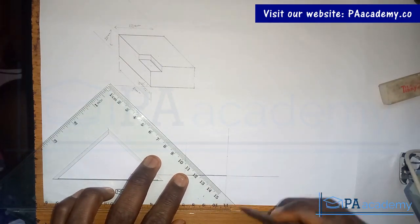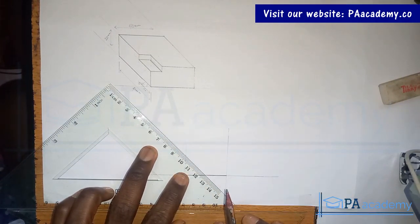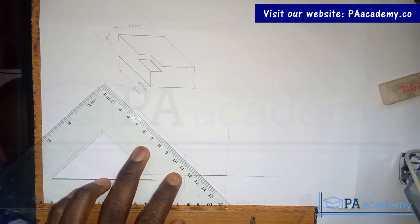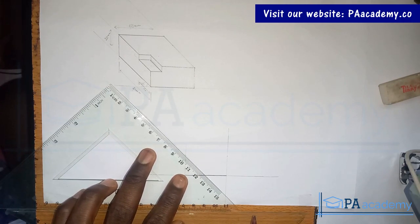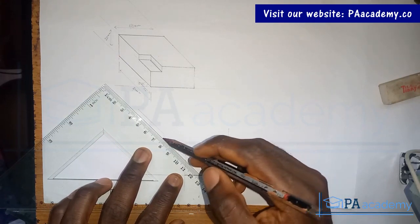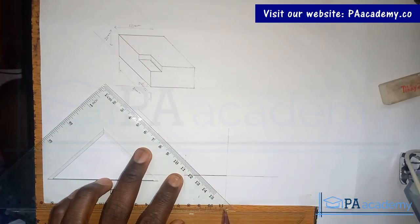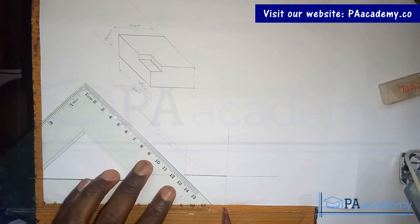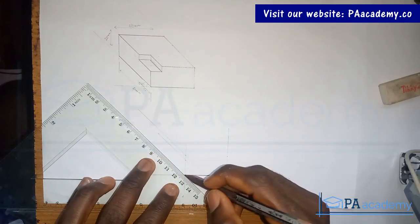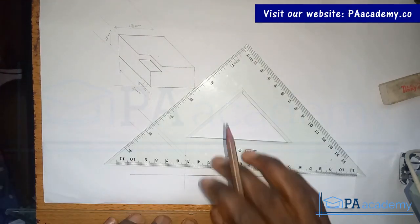In this position, you set your set square to go 45 degrees. From here, let me start with a faint line. From here to this point - a faint line. Let me just extend it and shift it to the other side.